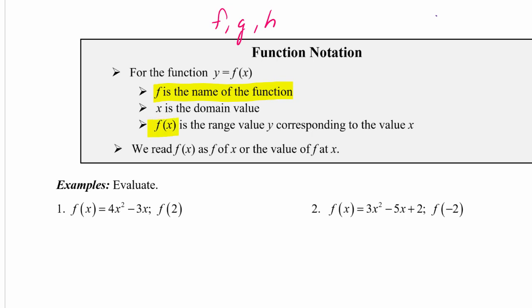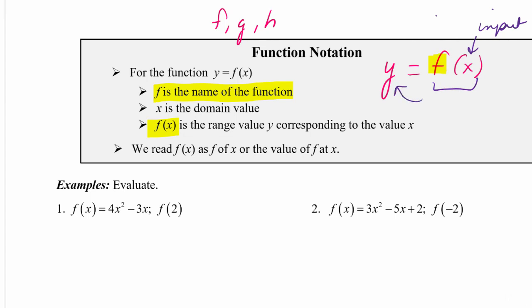y equal to f of x gives us information about the function. This notation tells us that f is the name of the function, that x is the input variable, and f of x is representing the output variable. That is read 'f of x,' and the parentheses used in the notation do not represent multiplication — this is just part of the notation.